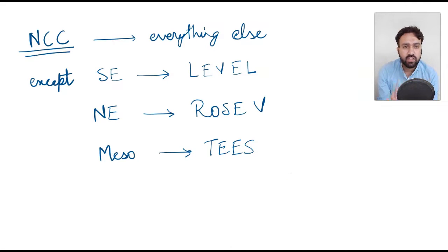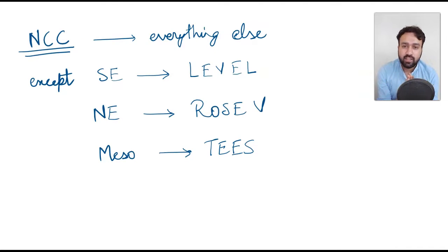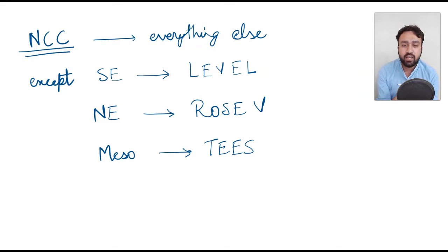To summarize: every structure in the eye is a neural crest derivative except surface ectoderm, which produces LEVEL; neuroectoderm, which produces ROSEV; and mesoderm, which produces the EOM, temporal sclera, and endothelium. Just remember this one slide and note it down wherever you revise your mnemonics from. I hope this video helped you remember this very volatile topic. If it did, please give it a like, subscribe to this channel for ophthalmology content, and let me know in the comments what topics you'd like next. Thank you for watching. Goodbye.